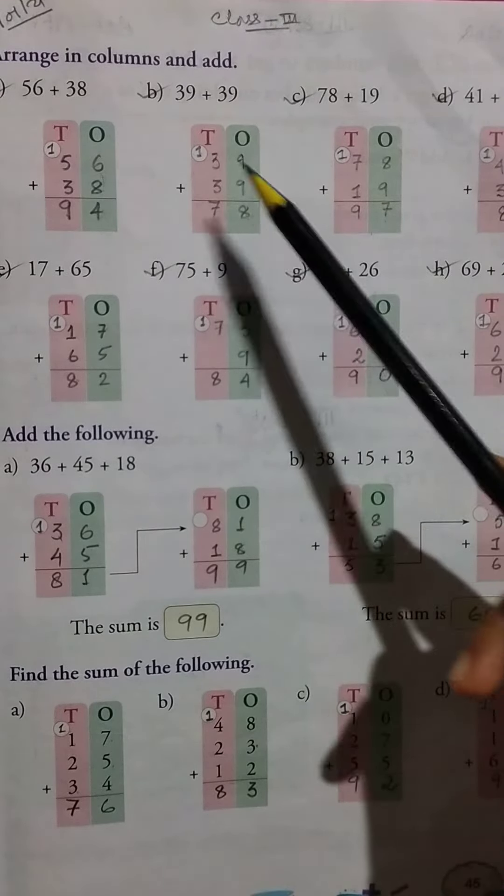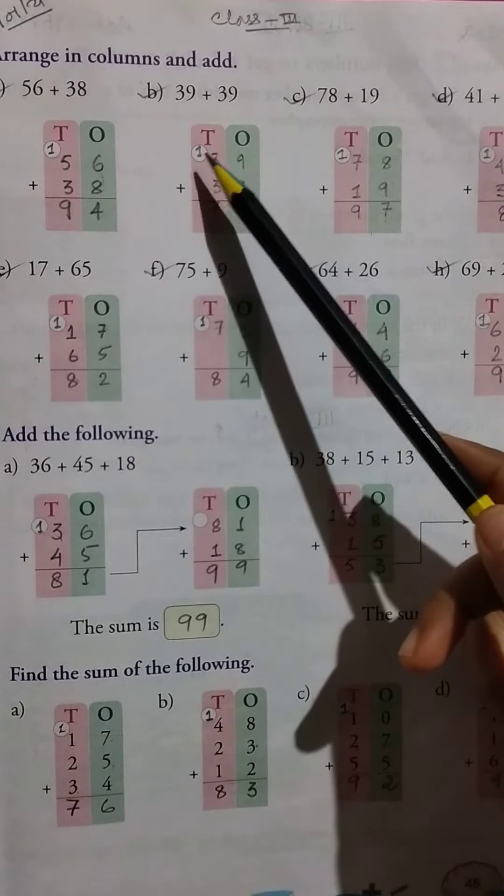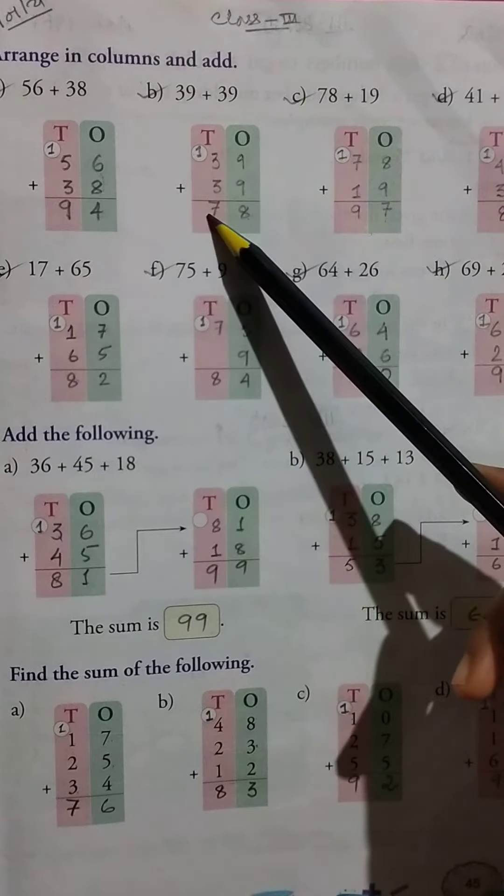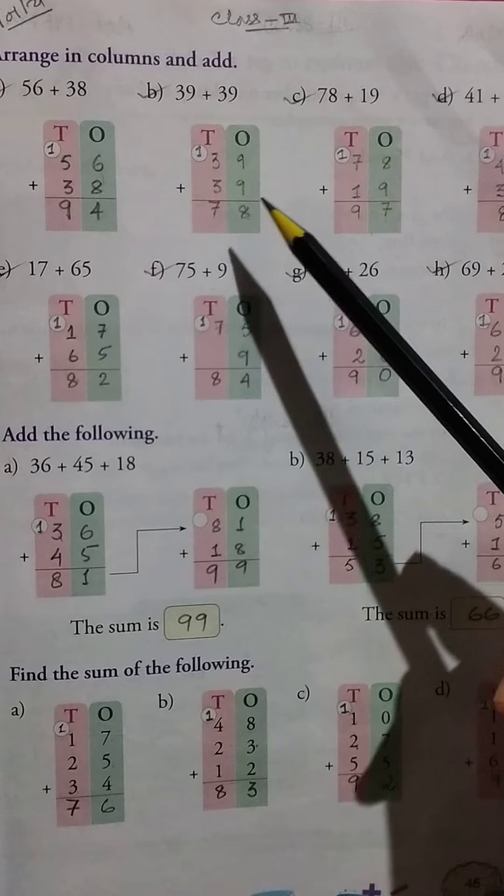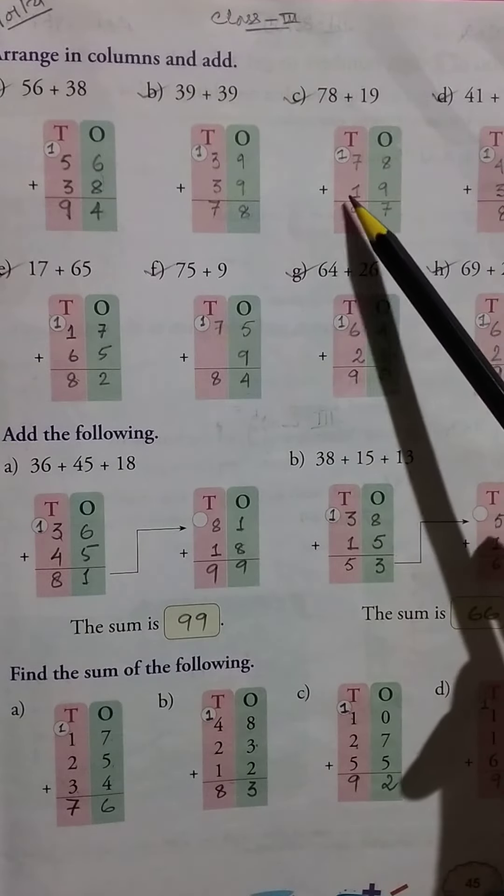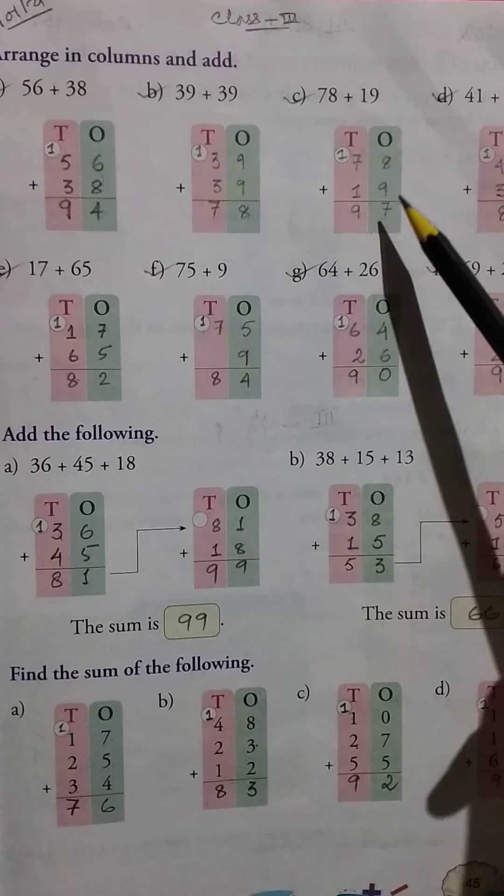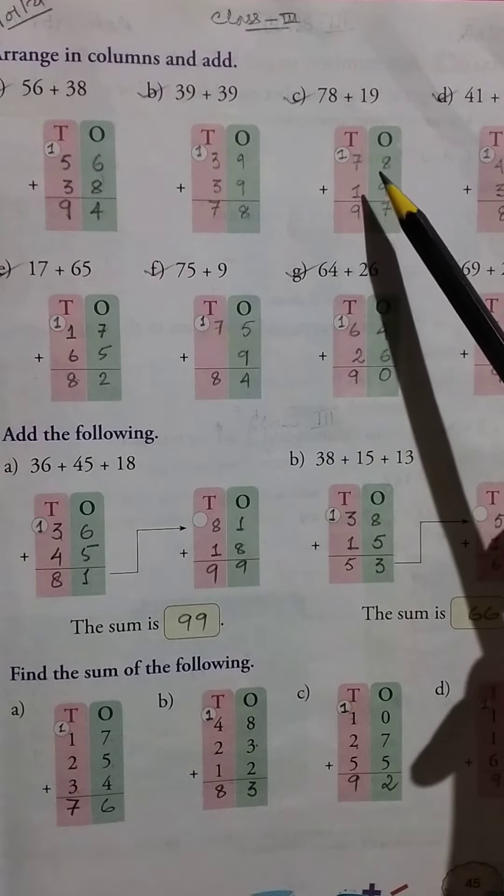So 3 plus 1 equals 4, 4 plus 3 equals 7. The answer is 78. Then 78 plus 19 equals 8 plus 9 equals 17, 7 here and 1 here carry. So 1 plus 7 equals 8, 8 plus 1 equals 9. The answer is 97.